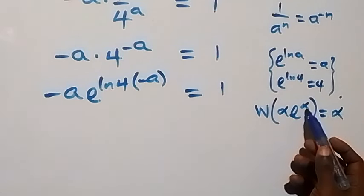From here we can also write ln 4 as ln 2 squared, so we have minus a ln 2 squared equals ln 2. Applying the power law, the 2 comes out, giving minus 2a ln 2 equals ln 2. Dividing both sides by ln 2, the ln 2 cancels, leaving minus 2a equals 1. Dividing by minus 2, we get a equals minus 1 over 2.